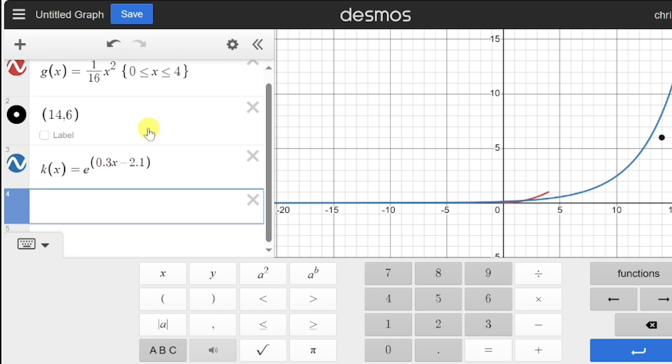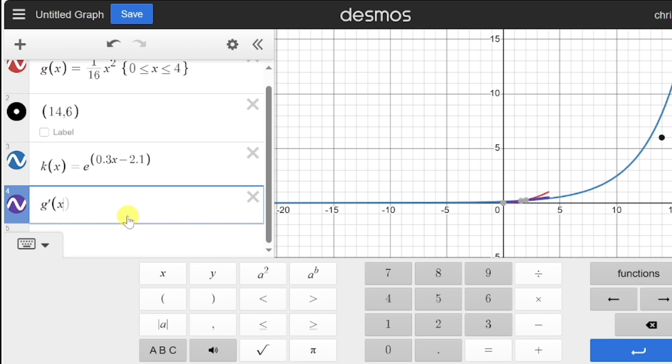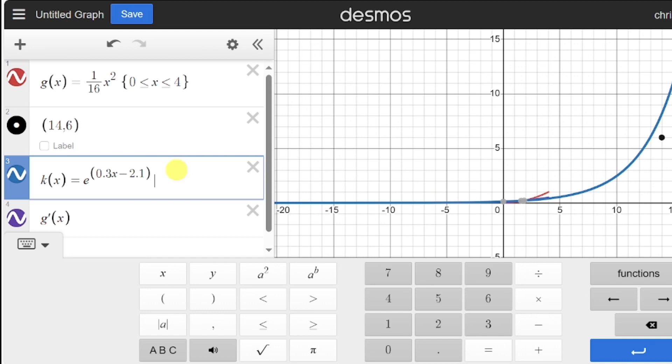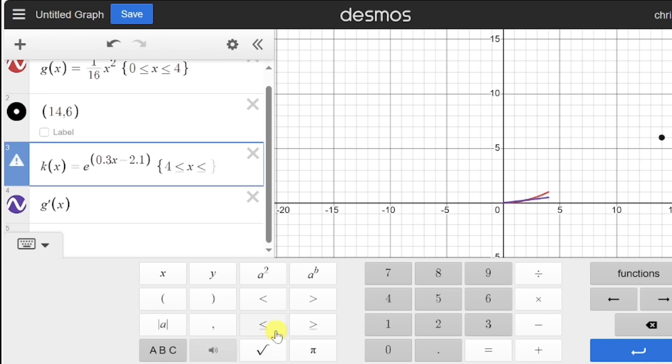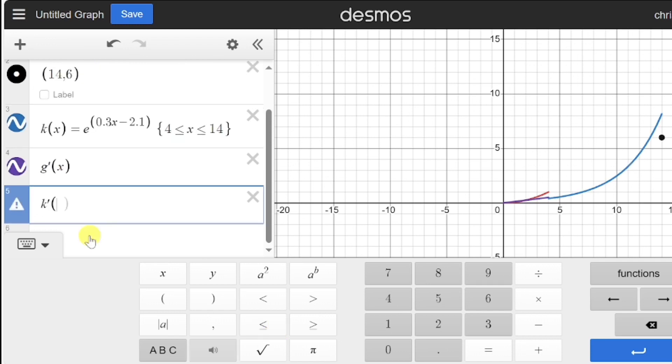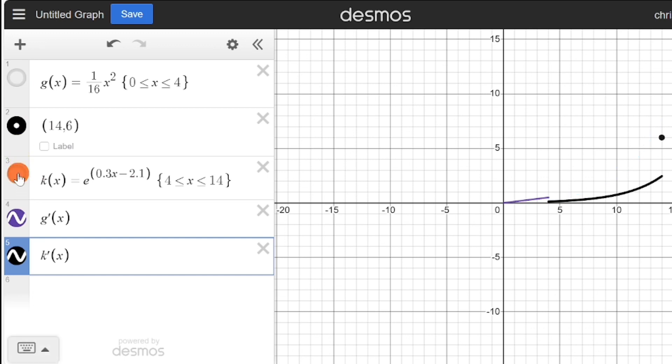So step two of this process is to add a derivative function for our first function and to add a derivative function for this function here. To add a derivative function, I can just type in g dash of x and you'll see that purple line there gives me a derivative function. What I might also quickly do is just restrict the domain of this function, the second function. Let's just go from 4 to 14. The reason I chose 14 is just because that's where the coordinate is of our point that we want to almost match with. We also need to create a graph of k of x, and just temporarily we're going to hide our original functions.